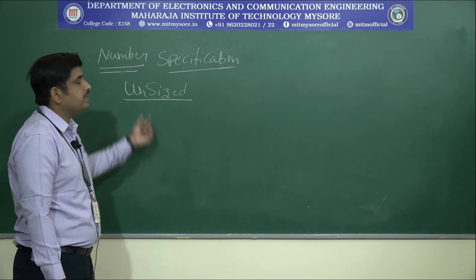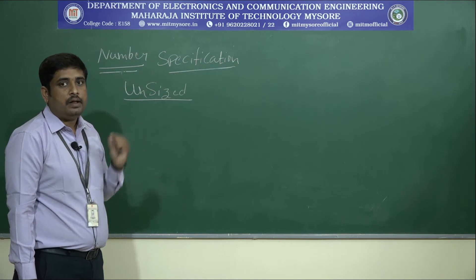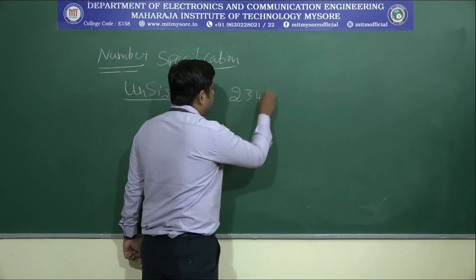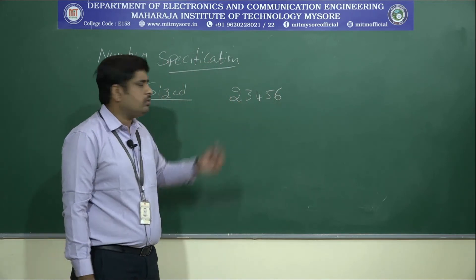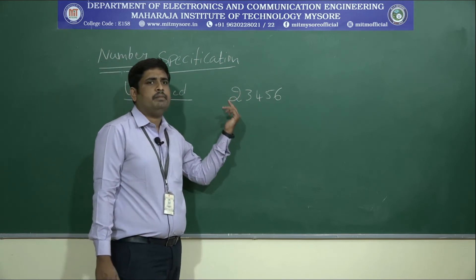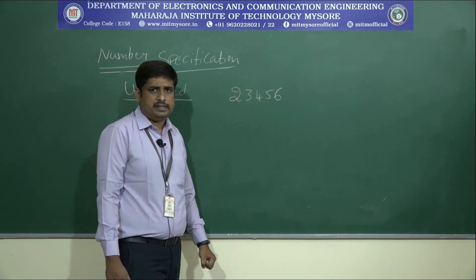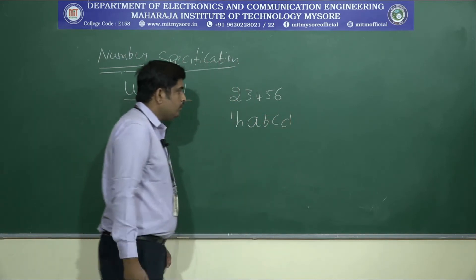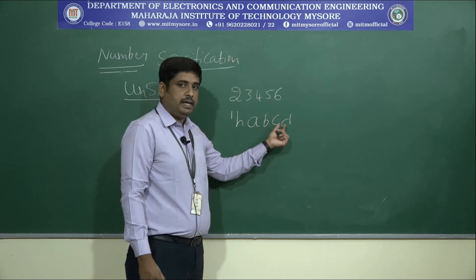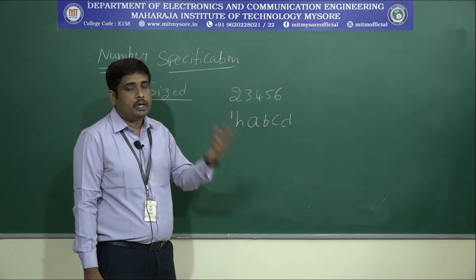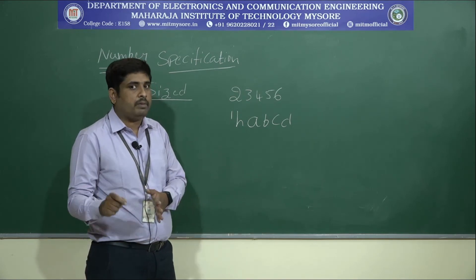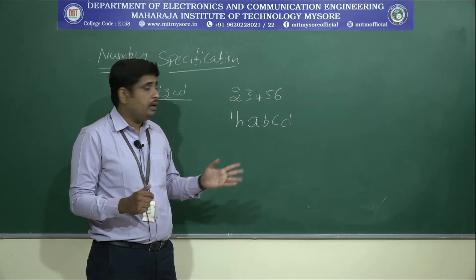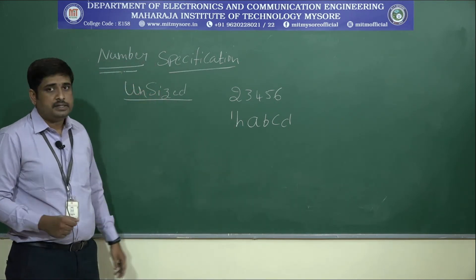Unsized representation means we do not mention the size of the number. For example, writing 23456 directly gives a decimal number — if no format is specified, it is automatically decimal. If you want hexadecimal, write 'hABCD. When you represent a number without a size (up to 31 bits), in machine language it automatically takes 32 bits. That is the specialty of unsized representation.